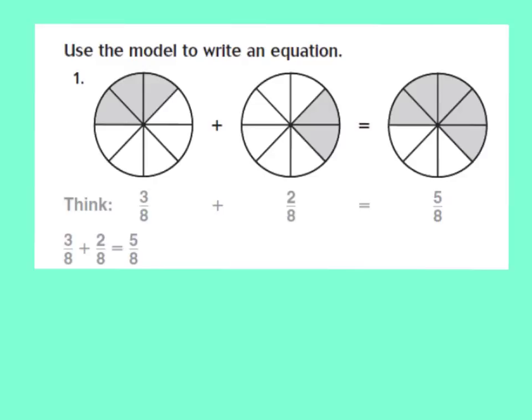Now if I take 3 eighths plus 2 eighths, all I have to do is add up my numerators, because my denominators are the same. So I take my 3 eighths and add the 2 eighths, and I get 5 eighths — that would be my answer. The denominator stays at 8, it stays the same. So the equation is: 3 eighths plus 2 eighths equals 5 eighths. I add 3 plus 2 to get 5, and keep the denominator the same.